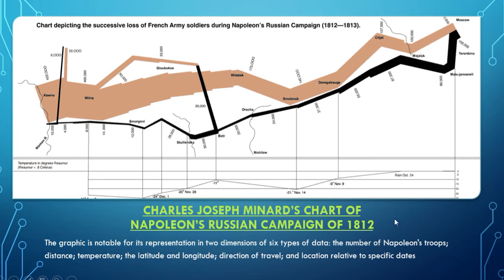Another early example — and some people say it is the best statistical graph ever drawn — was done by Charles Minard, and it has to do with Napoleon's Russian campaign. There are six different types of data in this graphic, and it's hard to read in a PowerPoint slide, so I urge you to look it up online. The data includes: the number of Napoleon's troops, shown by the width of the column where one millimeter equals 10,000 troops, and the distance traveled as you move across the chart.